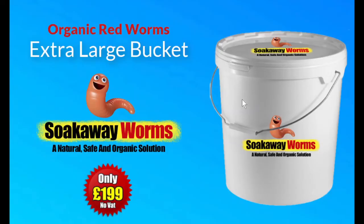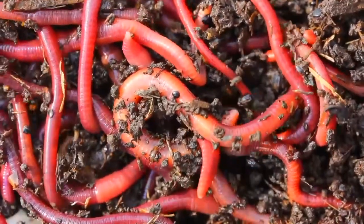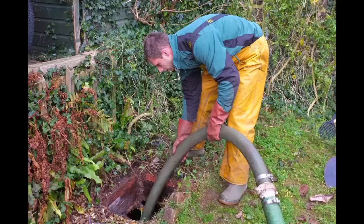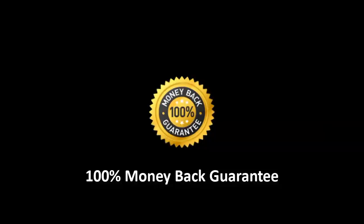So, let's just recap what you're getting today when you take advantage of this amazing offer. You're getting an extra-large bucket of my premium product, Organic Red Soak-Away Worms. Soak-Away Worms unblock soak-aways and prevent them from becoming blocked again. Because they eat all the fat and the grease and the sludge, there's nothing to be sucked out. So, you'll also save hundreds of pounds each year in septic tank emptying costs. And don't forget, they also come with a full 100% money-back guarantee.